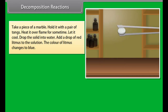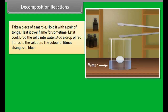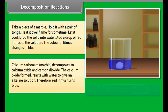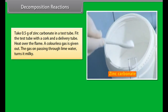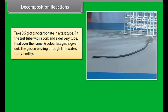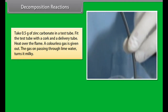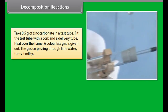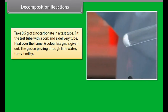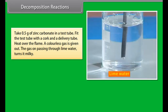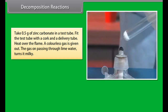Decomposition reactions: Decomposition reactions are those in which a compound breaks down into simpler compounds. For example, on heating, calcium carbonate decomposes to give calcium oxide and carbon dioxide: CaCO₃ → CaO + CO₂. Water decomposes to give hydrogen and oxygen when electricity is passed through it.